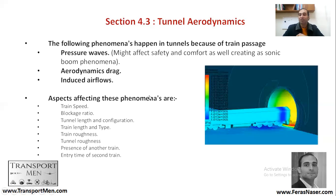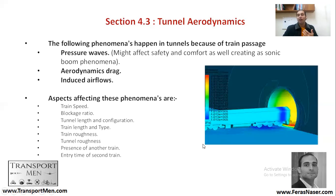What aspects affect these tunnel phenomena? The train speed — the speed at which a train enters a tunnel. The blockage ratio — how much of the tunnel is blocked. The tunnel length and what is inside it. The train length and type. The train roughness, the tunnel roughness, the pressure of another train — there might be another train coming from the opposite side or the same direction — and the entry time of the second train. All of these aspects affect these phenomena.